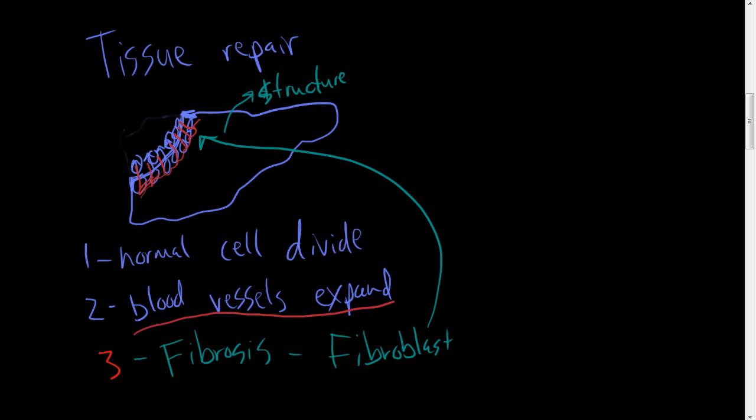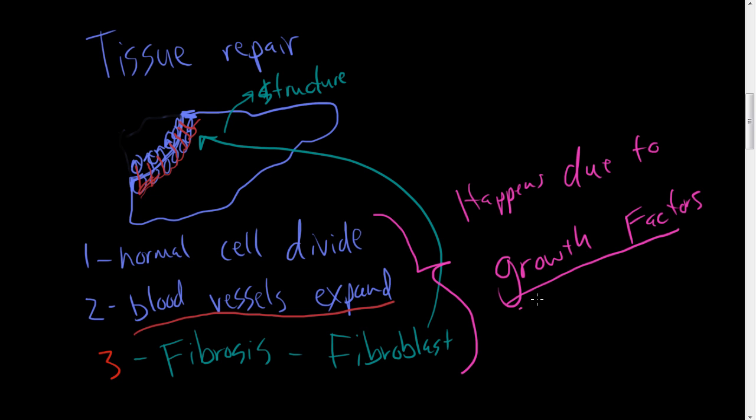And you might ask, well how does all this process happen? Well all this happens due to growth factors. So these growth factors are little proteins and they are going to be secreted in the area that will signal each type of these, each 1, 2, and 3 here. They're going to initiate this whole process of tissue repair and they're going to maintain the process of tissue repair.